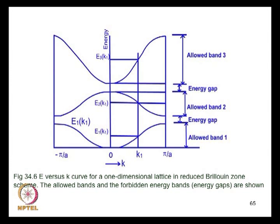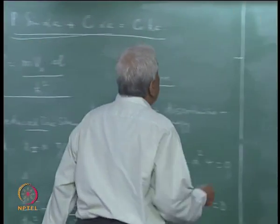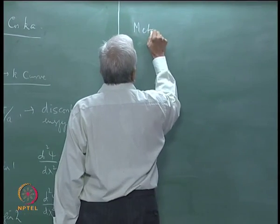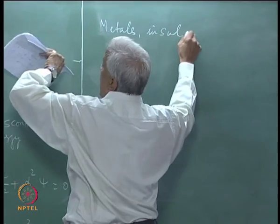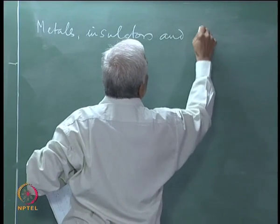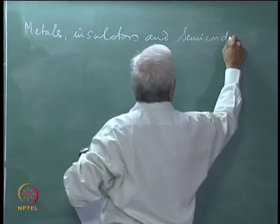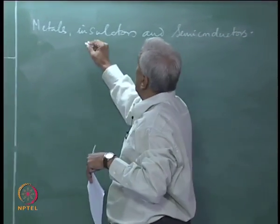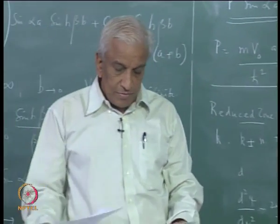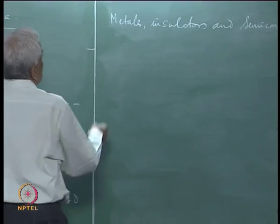This shows the entire energy band structure within the first Brillouin zone between −π/a and +π/a, describing a typical band structure. The Kronig-Penney model gives us an easy way to understand the formation of energy bands in periodic solids, which is very important in the discussion of the properties of metals, insulators, and semiconductors.